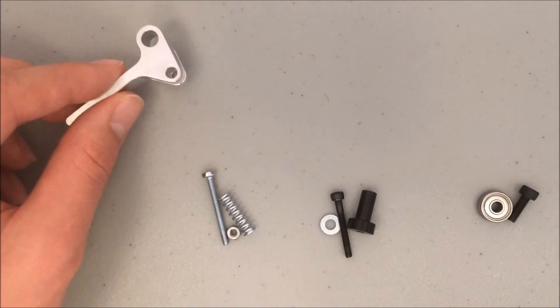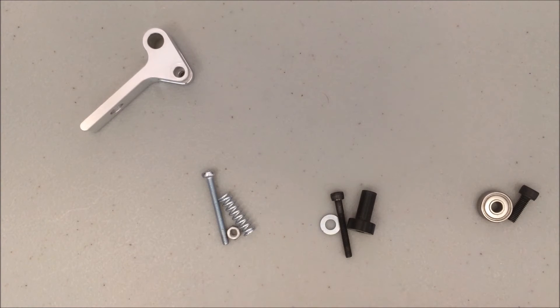To assemble the extruder arm, I've grouped together all the parts that connect to it. The M4 12mm screw passes through a bearing. The M3 25mm screw passes through this spacer and washer. The 30mm Phillips head screw passes through this spring and ends with this nut.